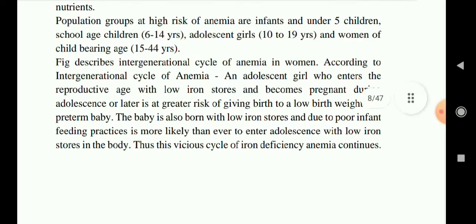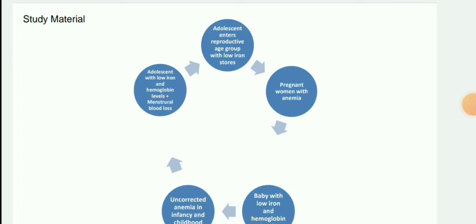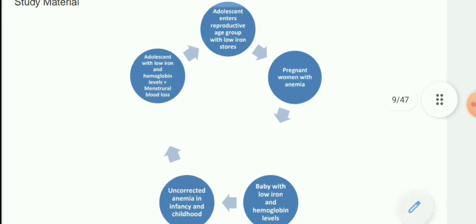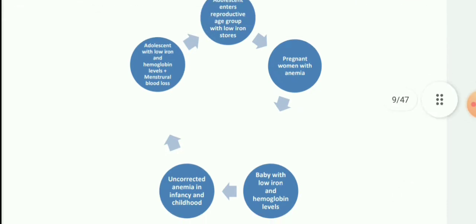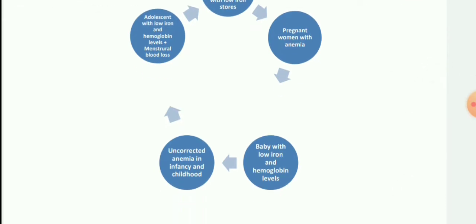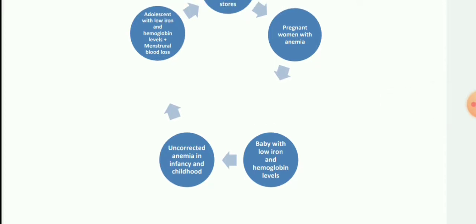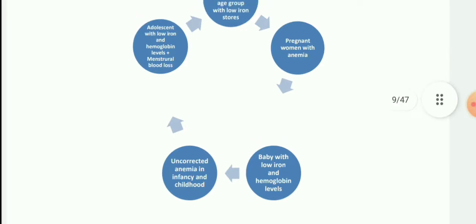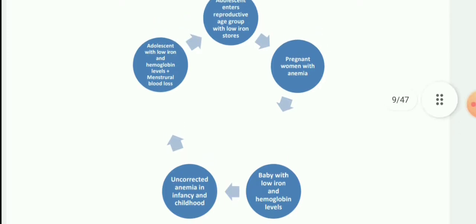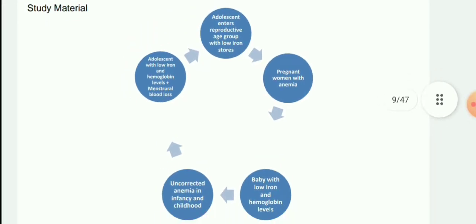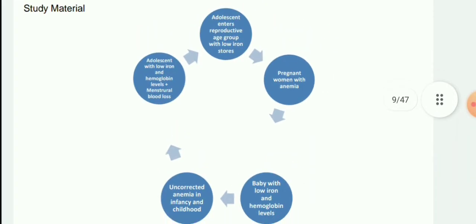An adolescent girl enters reproductive age with low iron stores. After she gets pregnant, the anemic pregnant woman passes low iron and hemoglobin levels to her baby, leading to uncorrected anemia in infancy and childhood. In adolescence, low iron stores persist along with losses due to the menstrual cycle. This cycle continues until the person receives a proper amount of iron in their diet.